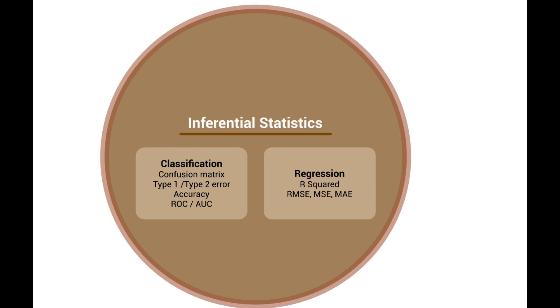Whereas, for regression problem where the outputs are continuous numbers, some common metrics are R squared, root mean squared error RMSE, mean absolute error MAE, mean squared error MSE.